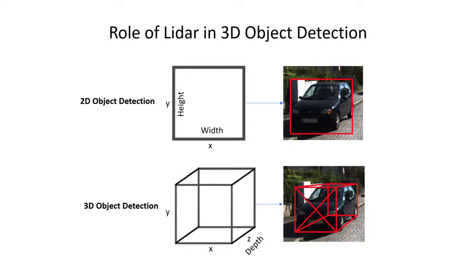In 2D object detection, the estimated box is a square and requires 2D coordinates x and y. While for 3D object detection, the estimated box is a cube.